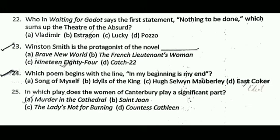Next question: who in Waiting for Godot says the first statement, 'Nothing to be done,' which sums up the theatre of the absurd? The correct answer is B, that is Estragon.